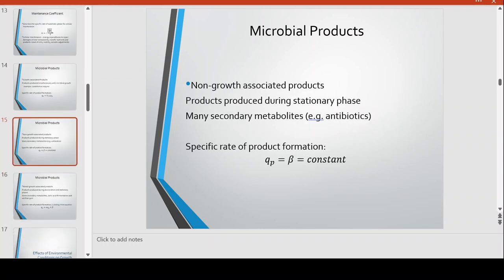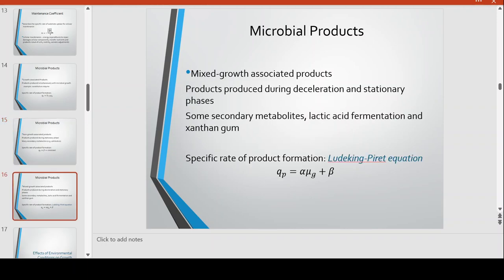Non-growth-associated products are another term for secondary metabolites. These are products produced during the stationary phase, and many secondary metabolites fall under this category — examples include antibiotics, toxins, and most other pharmaceutical products. For their specific rate of product formation, they do not follow the growth curve but have their own constant, signified as beta.